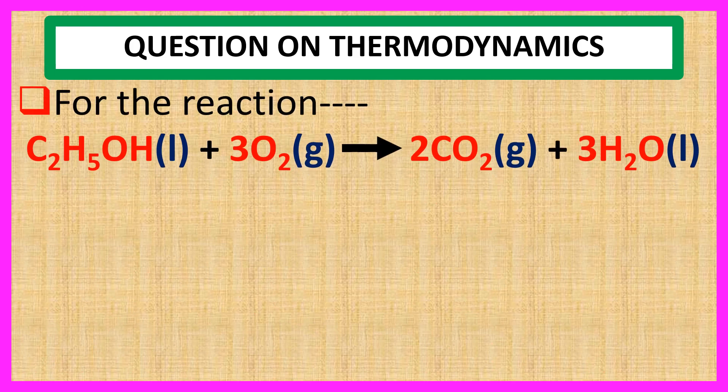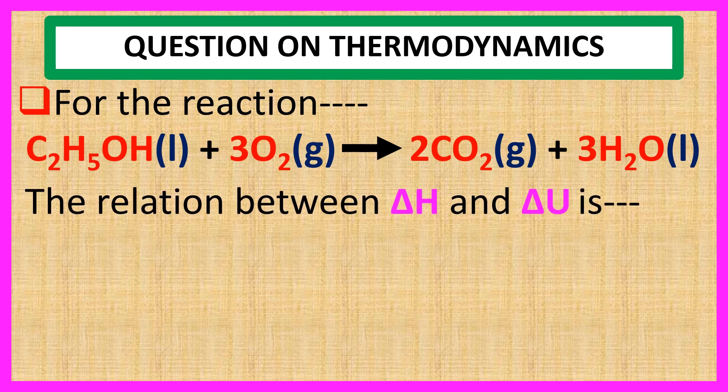For the reaction C2H5OH liquid plus 3O2 gas to 2CO2 gas plus 3H2O liquid, the relation between del H and del U is: